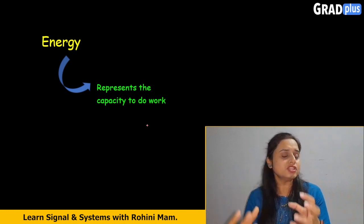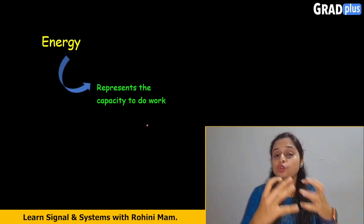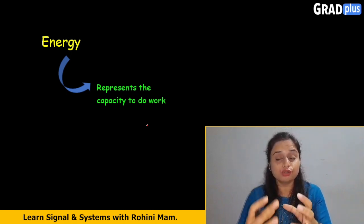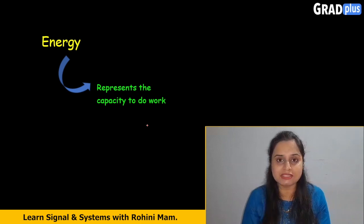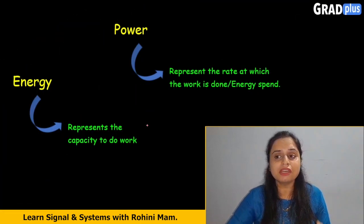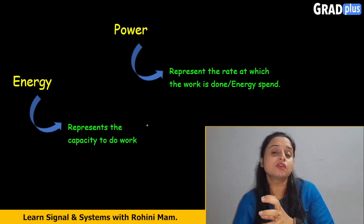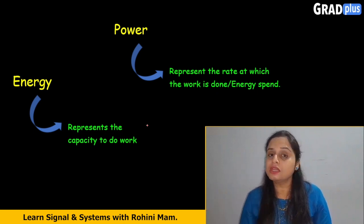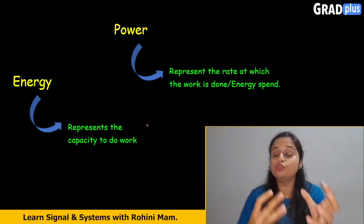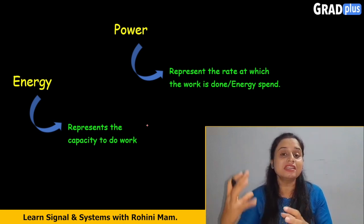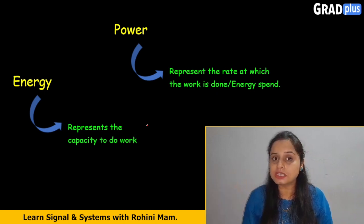Energy is nothing but the capacity of the signal to do some work. Power means at what rate that work is going to be done, or you can say at what rate the energy is spent to do that work — that is nothing but your power. This is the first difference.